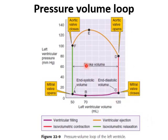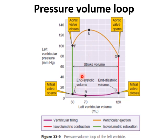Moving on to the pressure-volume loop — a graph comparing left ventricular pressure with left ventricular volume changes. It is used to identify systolic or diastolic dysfunction. On the x-axis is left ventricular volume; on the y-axis is left ventricular pressure. When we plot these, we get a loop called the pressure-volume loop. This loop has segments labeled A-B, B-C, C-D, D-E, E-F, and F-A.